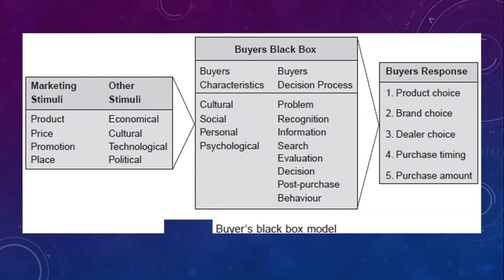The decision-making process is also part of the black box model. As a consumer responds to external stimuli, their black box processes choices based on internal factors and determines the consumer's response. The consumer's response reflects how likely they are to be influenced by external and internal factors — ultimately, there are only two outcomes: either the consumer buys the product or rejects it.